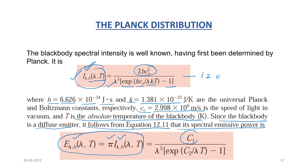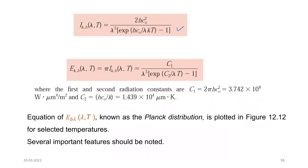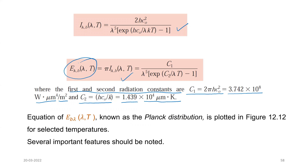Substituting Planck's law, E_lambda,b equals 2πhc₀² divided by λ⁵[exp(C₂/λT) − 1], where C₁ equals 2πhc₀² equals 3.742×10⁸ W·μm⁴/m², and C₂ equals hc₀/k equals 1.439×10⁴ μm·K. These are the first and second radiation constants. This equation for E_lambda,b is known as Planck's distribution, and it is plotted in the following figure for selected temperatures.